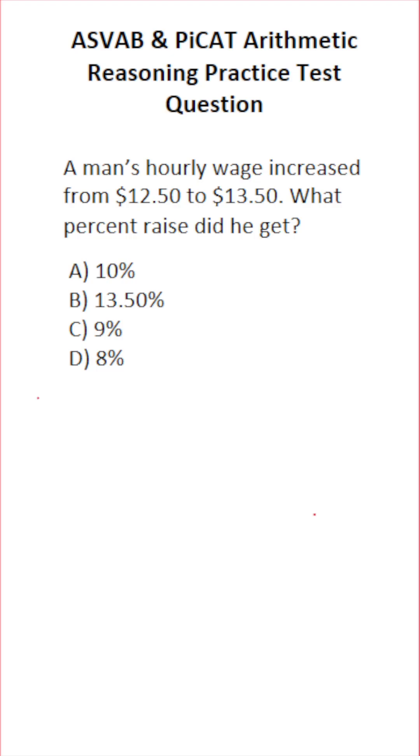So to answer this one, we're gonna use the percent change formula, which says you take your new value, subtract that by the old value, divide that by the old value, and multiply that decimal by 100 to convert it to a percent.